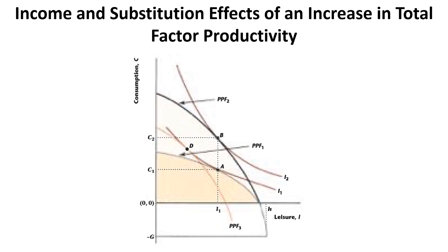In the previous video we saw that whenever there's an increase in government spending there is a negative income effect. But when there is an increase in total factor productivity — z, which denotes TFP — this leads to two effects: an income effect and a substitution effect. This graph shows how we can decompose the income and substitution effects of an increase in total factor productivity.